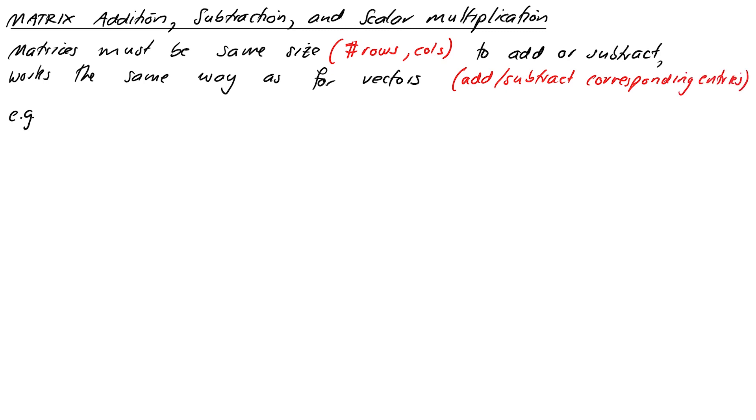For example, if I take the matrix [1, 3, -1; 2, 1, 0] and subtract the matrix [0, 4, -2; 1, 3, -1], I get the matrix [1, -1, 1; 1, -2, 1].